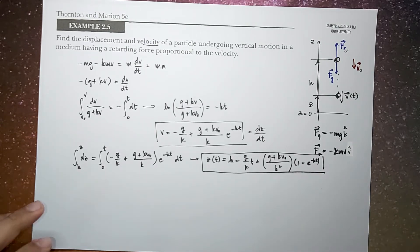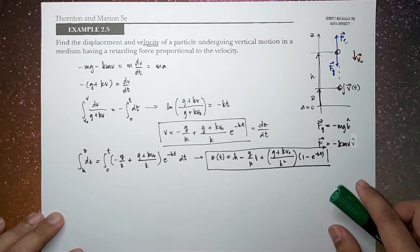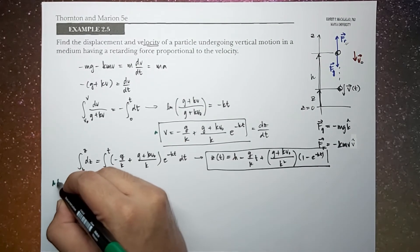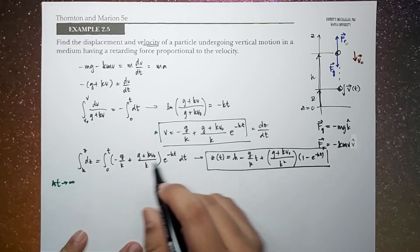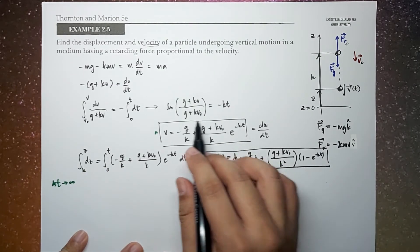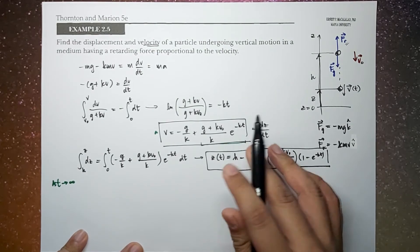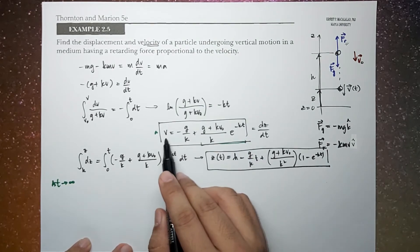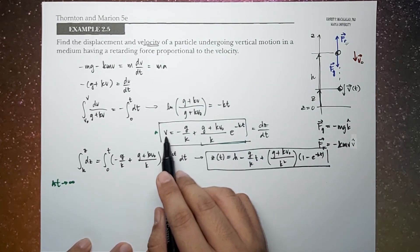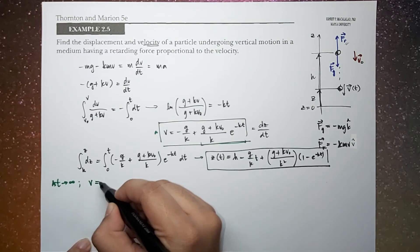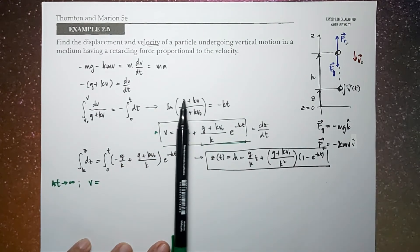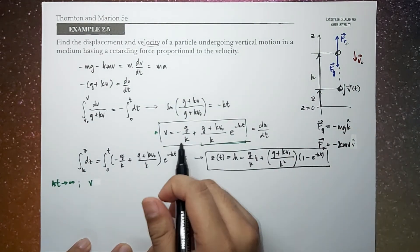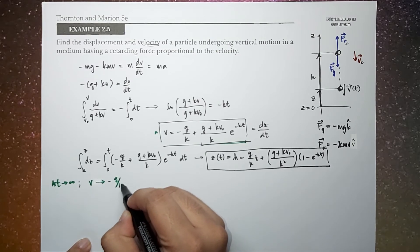Let's analyze the motion further. For the velocity, as time approaches infinity, you notice that the exponential term will approach zero. This indicates that there is a limiting value of v, and that limiting value is negative g over k.